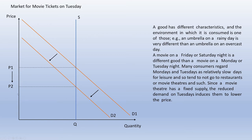With the vertical supply curve unchanged and demand shifting left, quantity remains the same but the price is lower. In reality, movie theaters are more complex — they can close projection rooms and reduce staff — but holding everything else equal and focusing purely on seats versus demand, this diagram is correct. And you can see it in real life: Tuesdays are cheap for movies pretty much worldwide, because of exactly the forces outlined here.